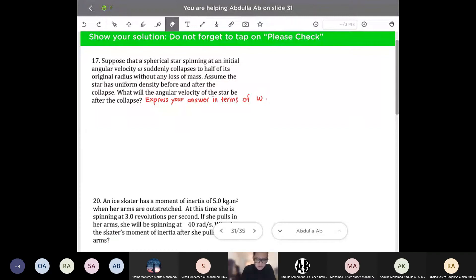Alright, suppose that a spherical star spinning at an initial angular velocity omega suddenly collapses to half its original radius without any loss of mass. Assume the star has uniform density before and after the collapse. What will the angular velocity of the star be after the collapse? So this question is about conservation of angular momentum.